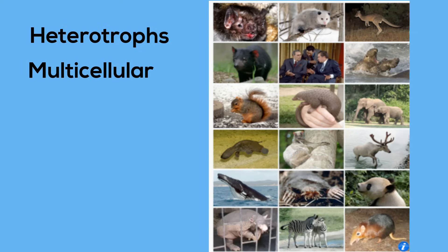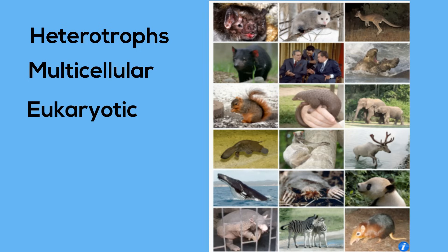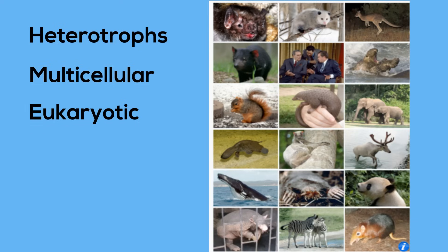Animals are multicellular, meaning they are made up of more than one cell. Animals are eukaryotic, meaning they have membrane-bound organelles and a nucleus. Most cells in animals are diploid, which means they have two pairs of chromosomes.